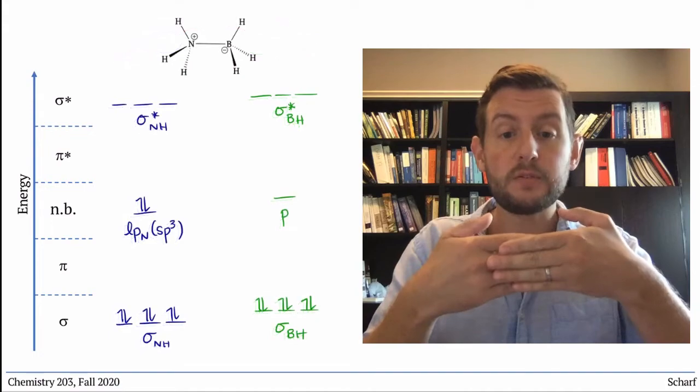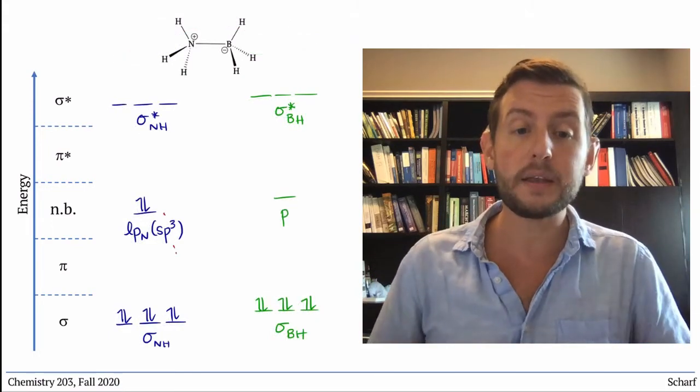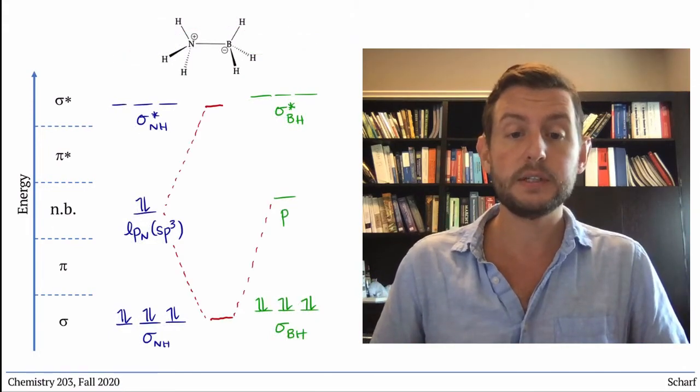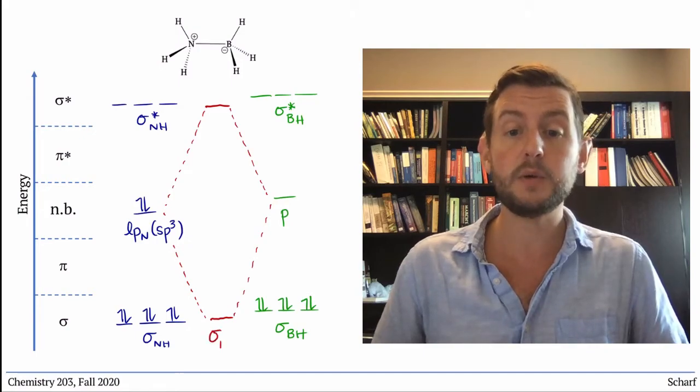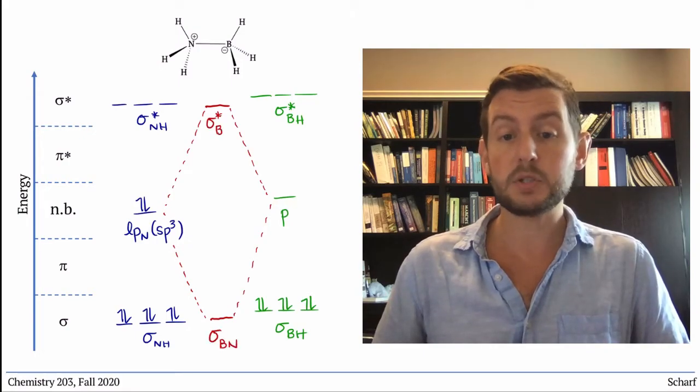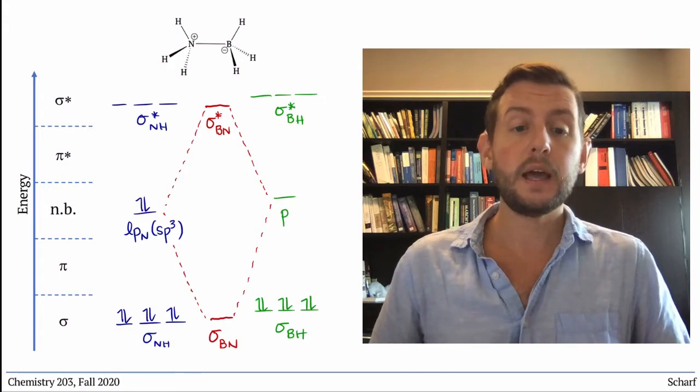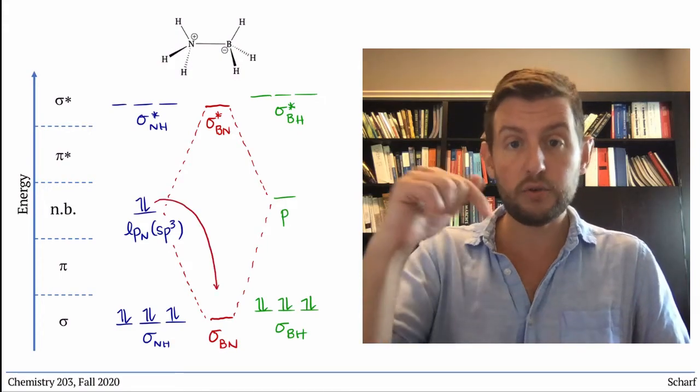When those two orbitals overlap, they make new bonding and antibonding orbitals. In this case, a sigma bond between nitrogen and boron, and a sigma star orbital. And the electrons go into the new bonding orbital.